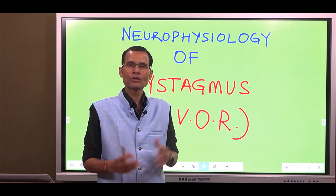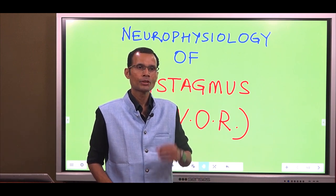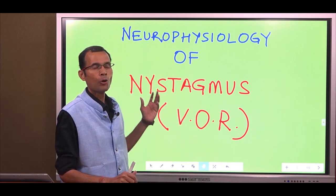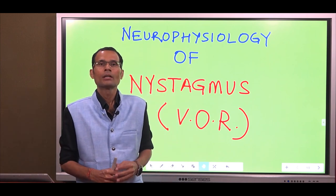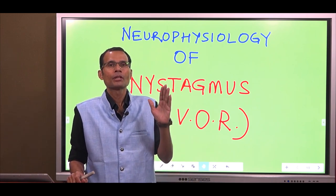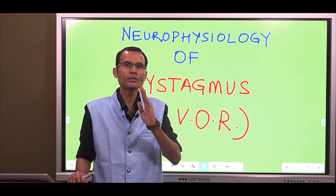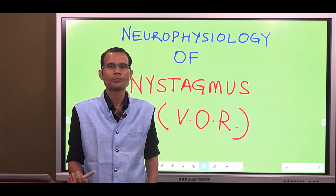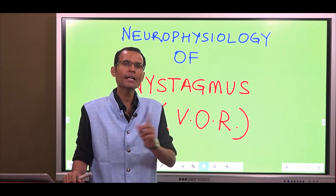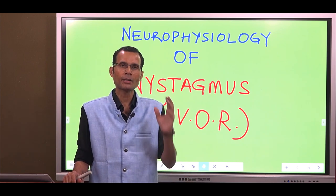Hello friends. There was a long pending request for a video on nystagmus. So let's try to understand the neurophysiologic basis for nystagmus. Nystagmus is involuntary repetitive oscillatory jerky movements of the eyeballs.